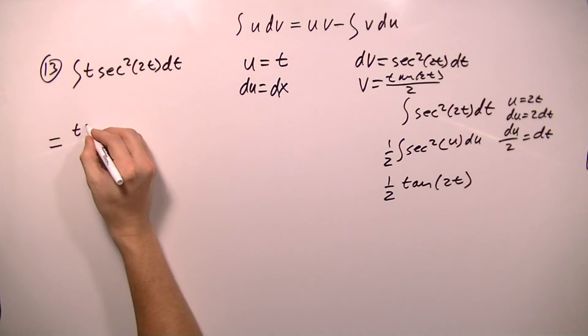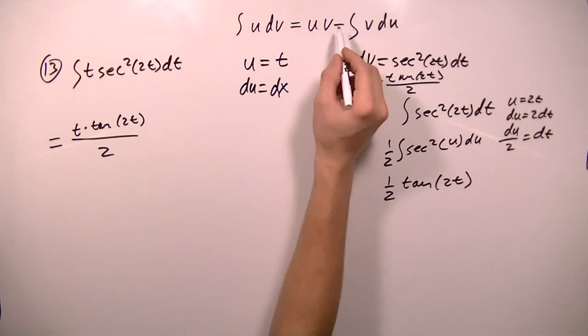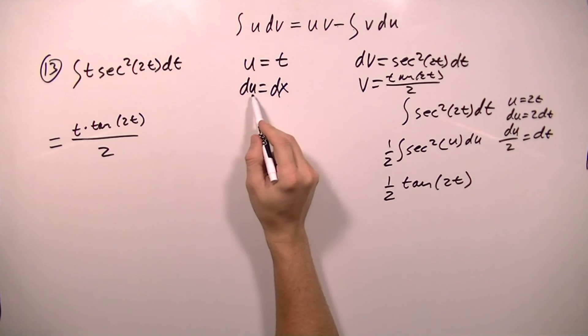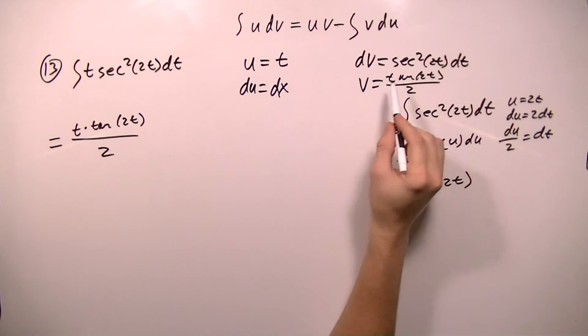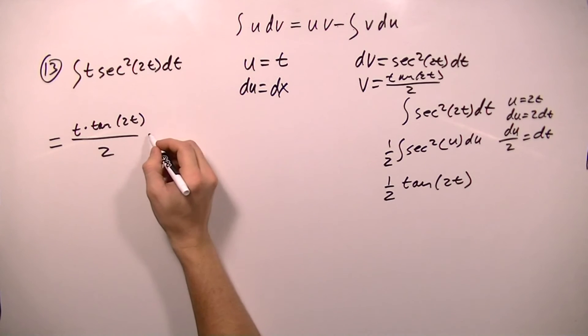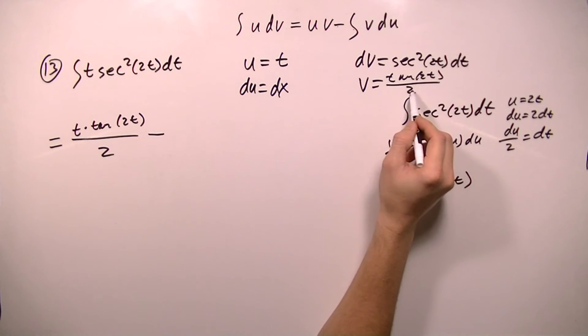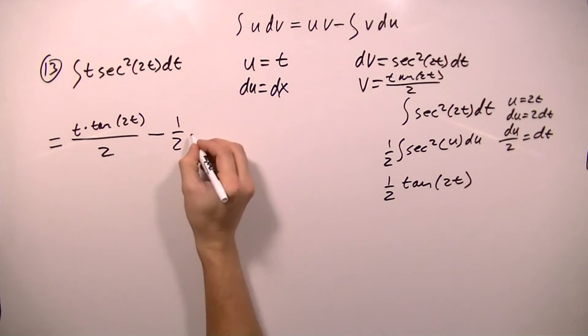So I'm going to get t times tangent 2t over 2. And then I'm going to subtract the integral of v du. So du is dx, and v is tangent 2t over 2. So I'm going to subtract, and I'm going to factor out this over 2 first. So I'm going to have one half out here,